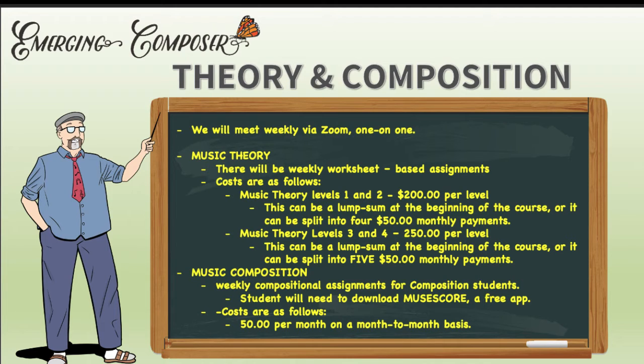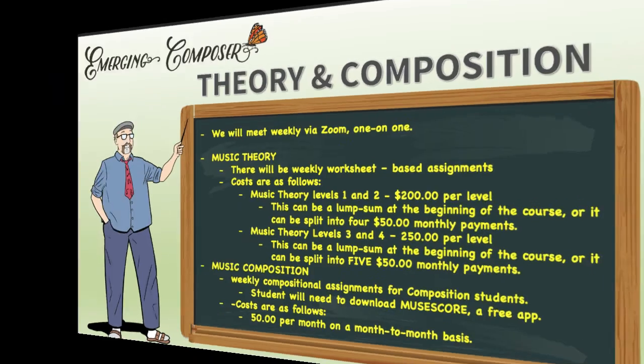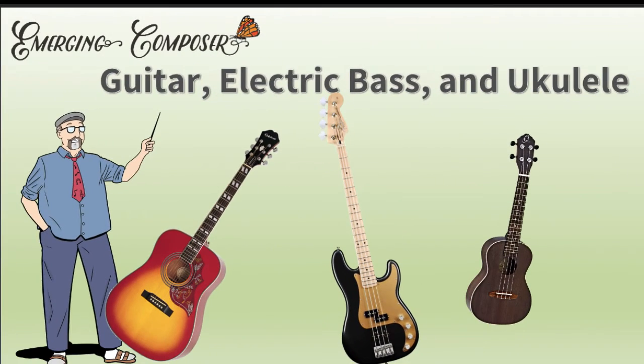Cost for composition will be $50 per month on a month-to-month basis. Now, what about guitar, electric bass, and ukulele lessons?